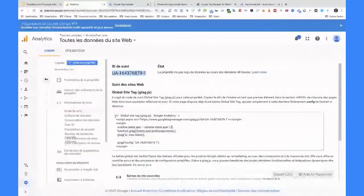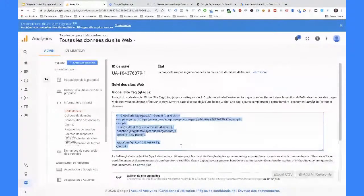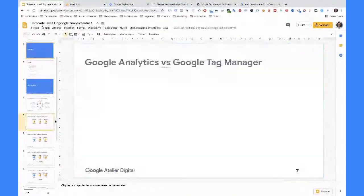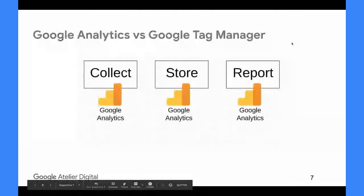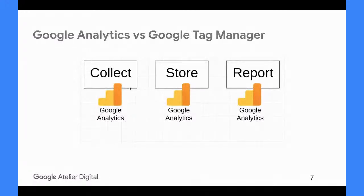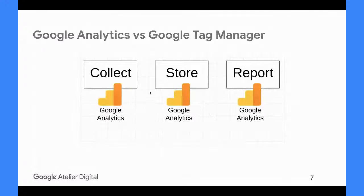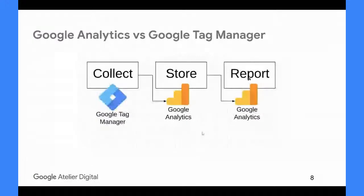Il vous donne un code de suivi et il vous dit que ce code de suivi va être intégré sur toutes les pages de votre site web. Ça, j'ai envie de dire, c'est l'ancienne manière de faire. Aujourd'hui, on est en 2020 et on va utiliser Google Tag Manager. L'ancienne manière de faire, ça va être d'installer Google Analytics directement sur le site web par l'intermédiaire du code de suivi. On fait la collecte par Google Analytics, les données sont collectées, elles sont envoyées chez Google Analytics où elles sont stockées. Ensuite, on va pouvoir faire des rapports et visualiser nos données à l'intérieur de Google Analytics. Ça, c'était l'ancienne manière de faire.